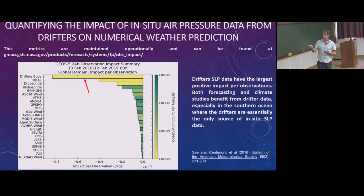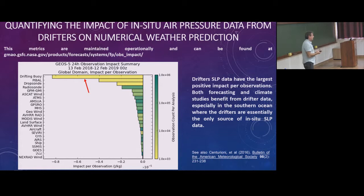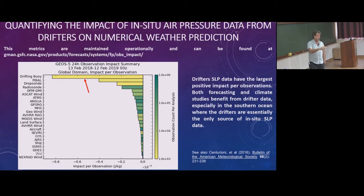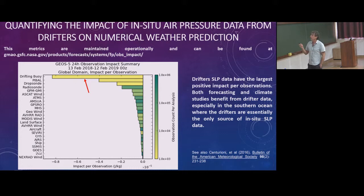This is an example of the impact per observation computed by NASA on an operational basis, using the dry energy norm — you compute the energy of the atmosphere and every observation contributes a little bit to that metric. When normalized by the number of observations, drifters very often are number one in terms of impact, followed by balloons, drop sondes, and so on. So as a zeroth-order baseline, it's important to have these observations during this experiment and for further analysis to better understand the circulation of the atmosphere.